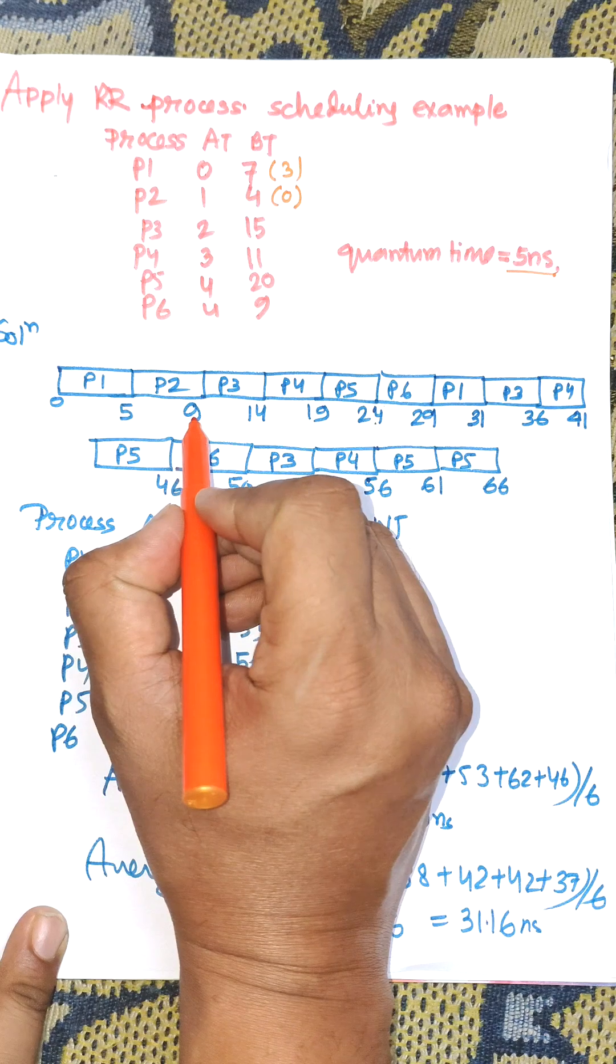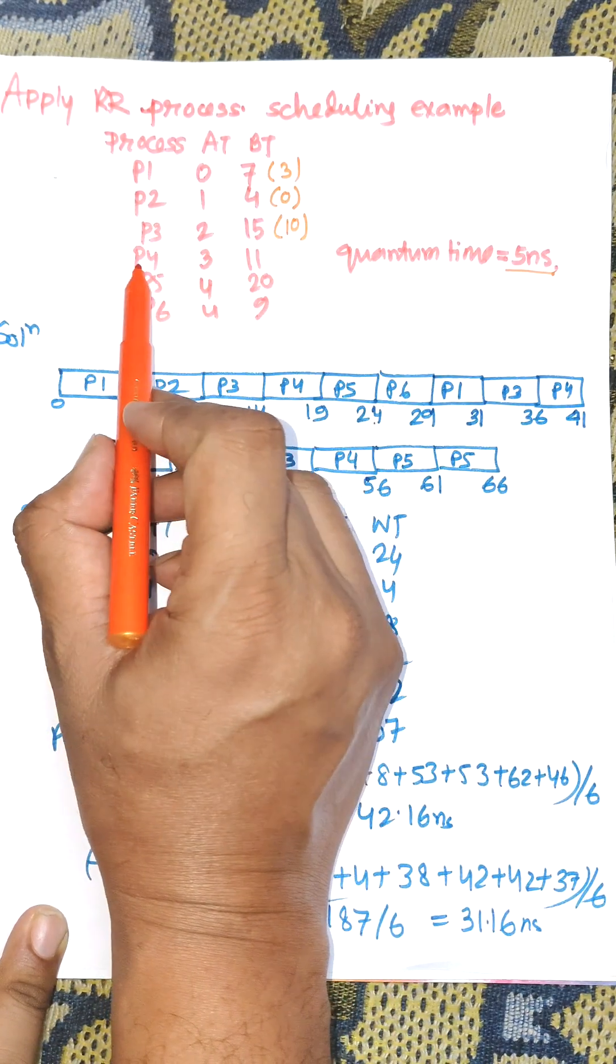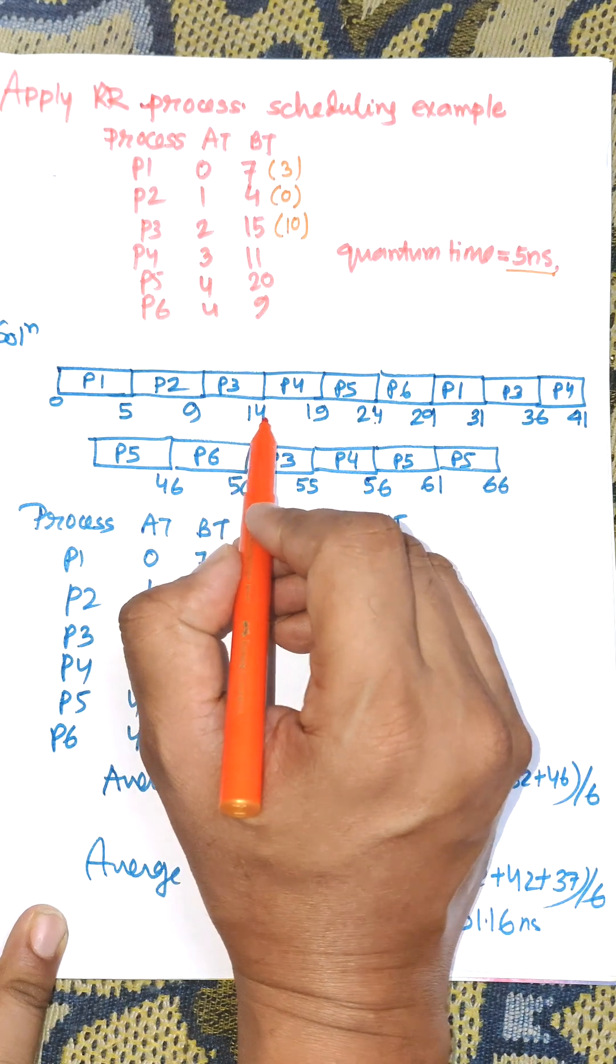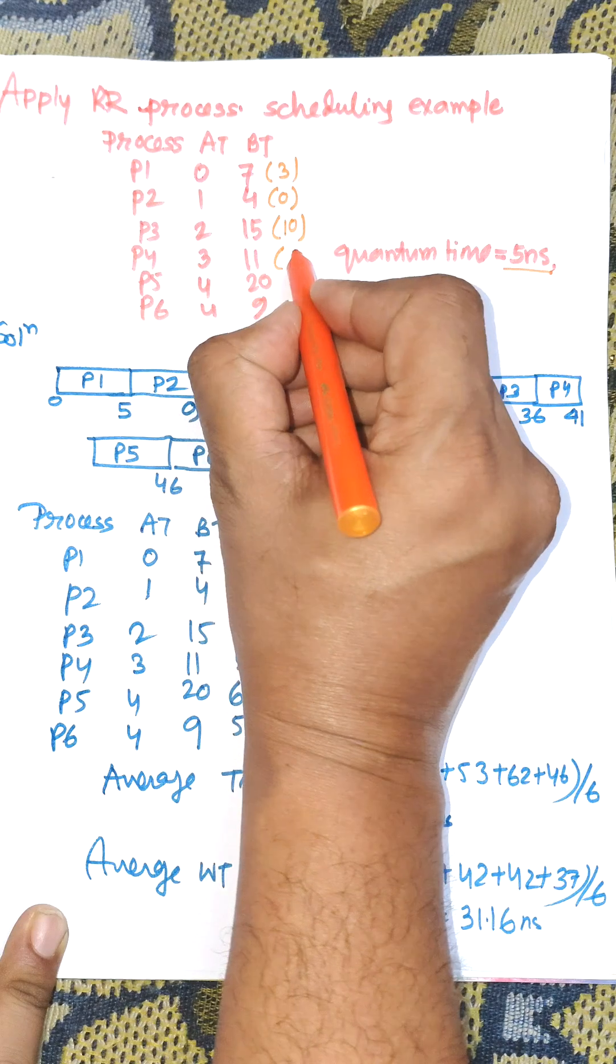P3 executes for 5 nanoseconds: 9 plus 5 equals 14. Remaining time is 10. Now control goes to P4, and it will execute from 14 to 19. Remaining time is 6.